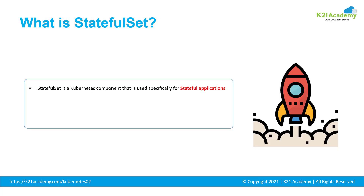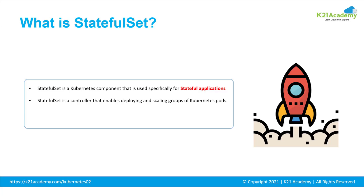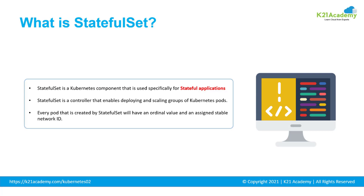Moving forward, the stateful set is the controller that looks after the deploying and scaling of Kubernetes pods, where scaling refers to the increment or decrement in the number of replicas. The pod is the smallest deployable object in Kubernetes. Every pod created by a stateful set has an ordinal value and an assigned stable network identity, meaning all pods in a stateful set have a sticky unique identity based on the unique ordinal number assigned by the stateful controller.